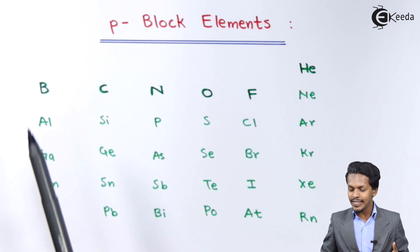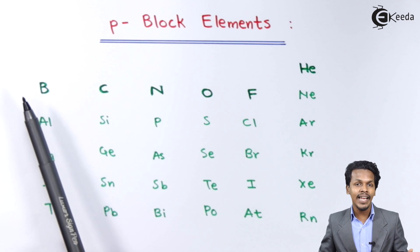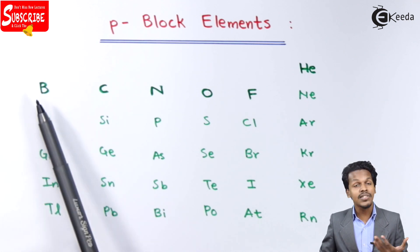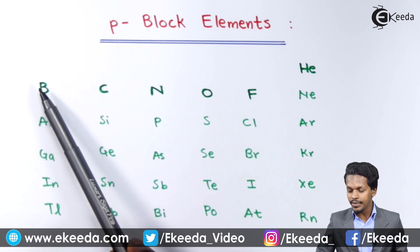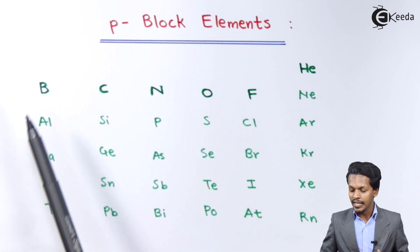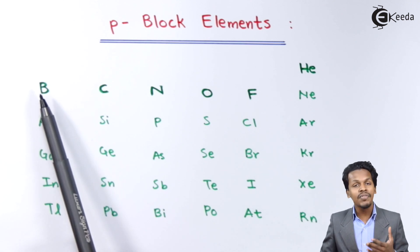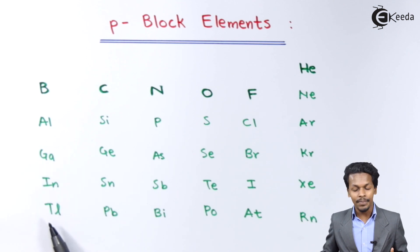It starts with group 13 and it ends with group 18. So this is the group 13 element. It starts with Boron, so all the elements that are belonging to the group of Boron are known as Boron Family Elements. Boron is the first element of group 13, and after that it is Aluminium, Gallium, Indium and Thallium.